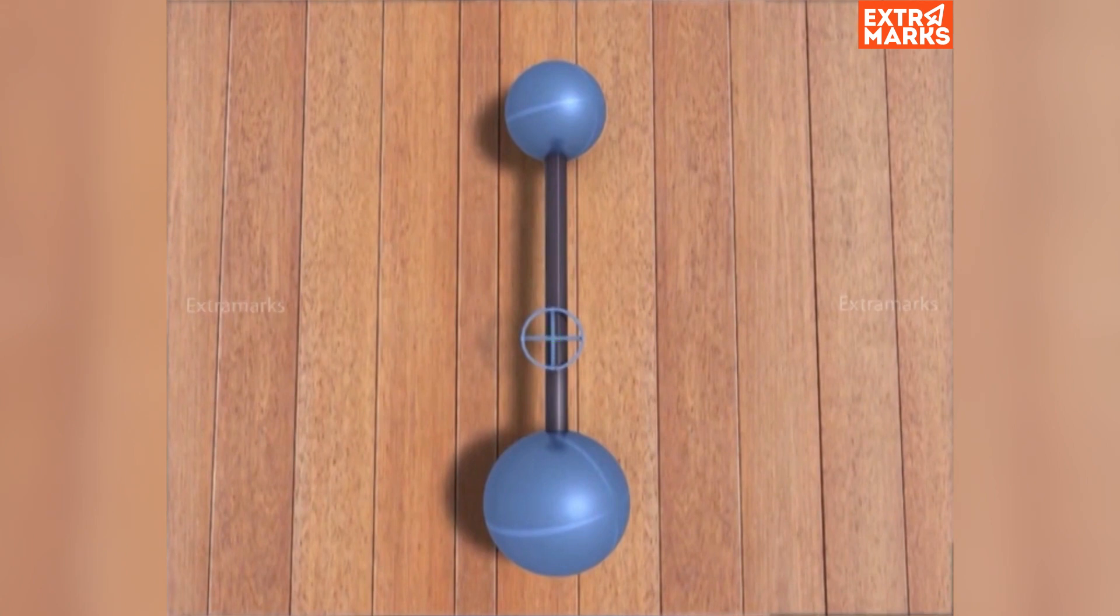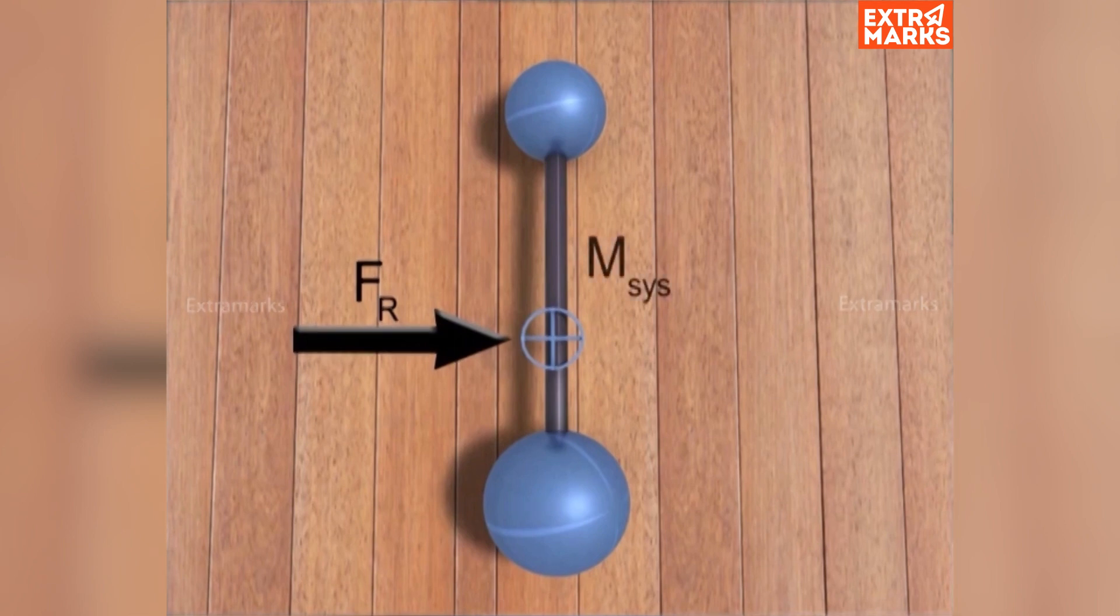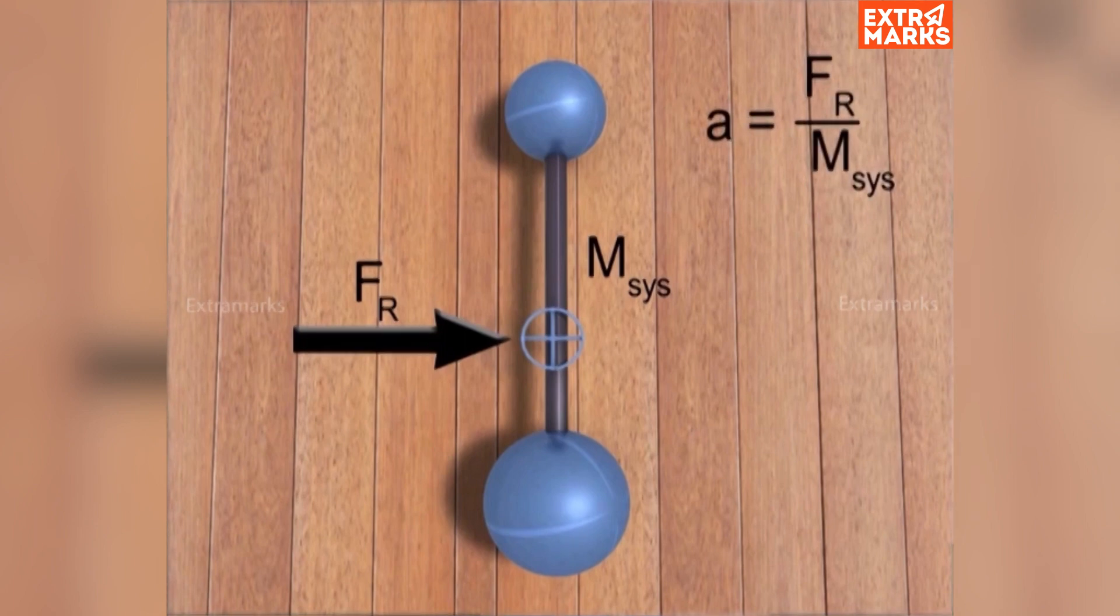If F_R is the resultant force and M_sys is the mass of the system, then the center of mass of the system moves with an acceleration given by a = F_R / M_sys.